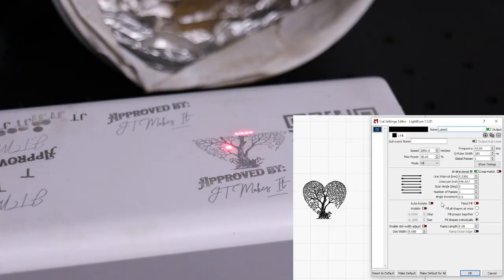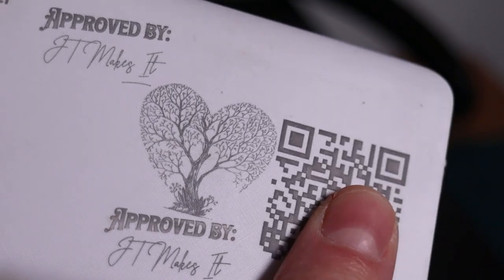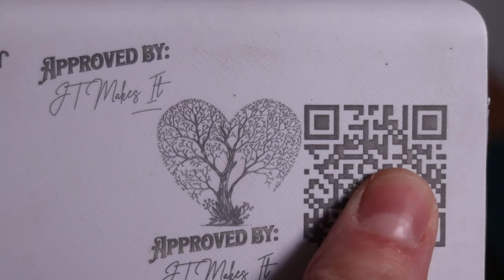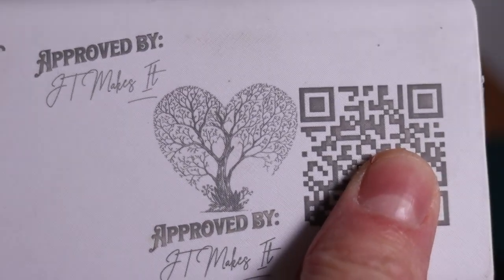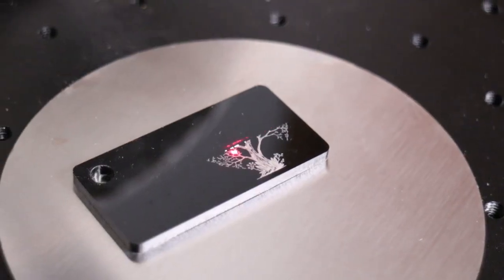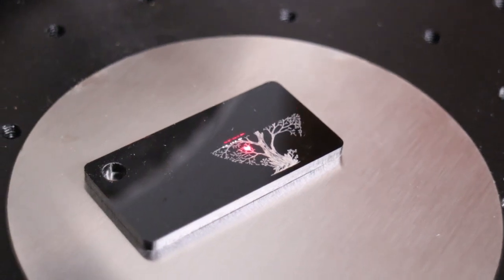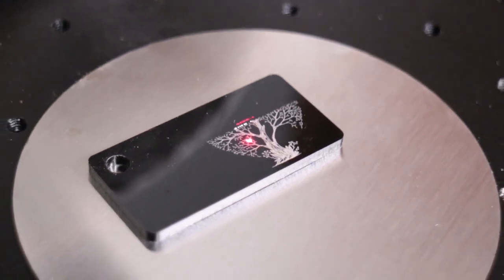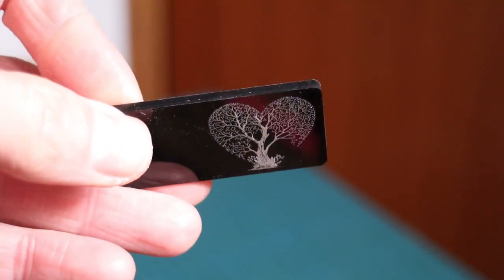Using a Mopa Fiber Laser you can produce very nice looking engravings on some plastics, since lowering the Q-Pulse will prevent the surface from melting too much like it is often the case with normal fiber lasers. Interestingly, if you use the same settings on black acrylic, it results in white engraving.